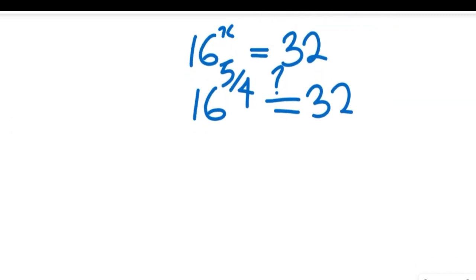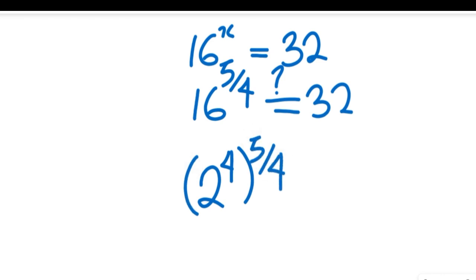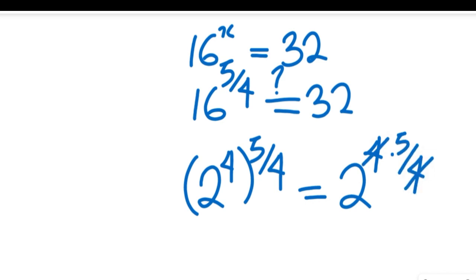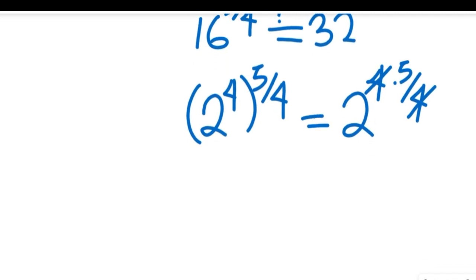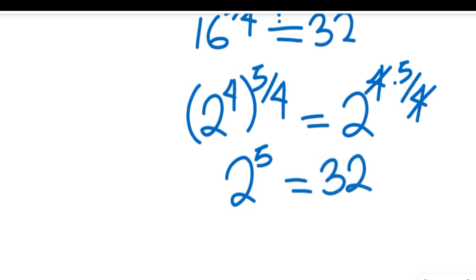With x equal to 5/4, we recall that 16 is equal to 2 to the power of 4, so we have 2 to the power of 4, all to the power of 5 divided by 4. Applying the law of indices, this gives us 2 to the power of 4 multiplied by 5 divided by 4. The 4s cancel, giving us 2 to the power of 5, and 2 to the power of 5 equals 32.